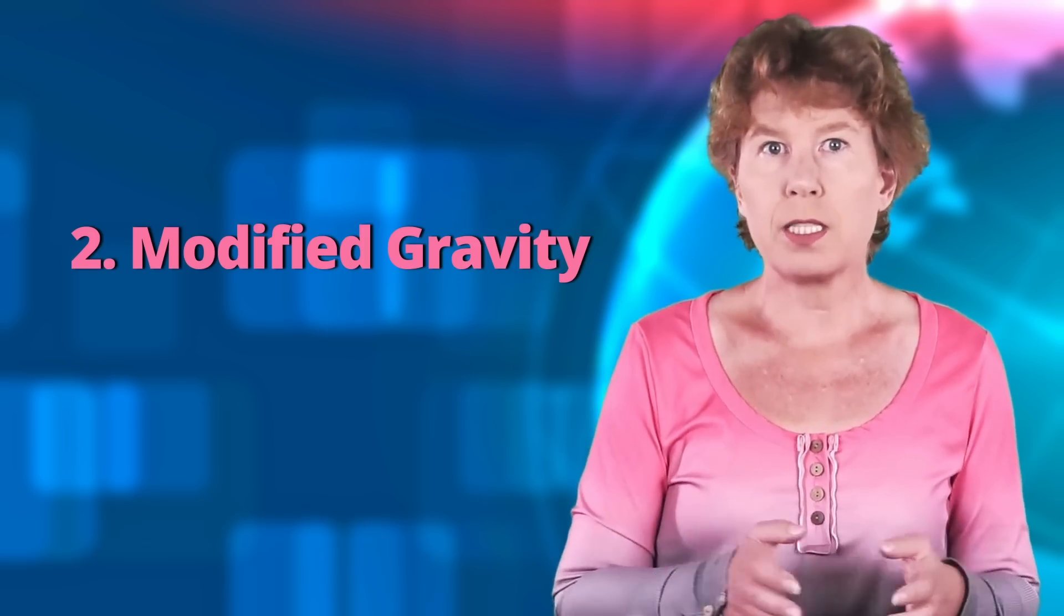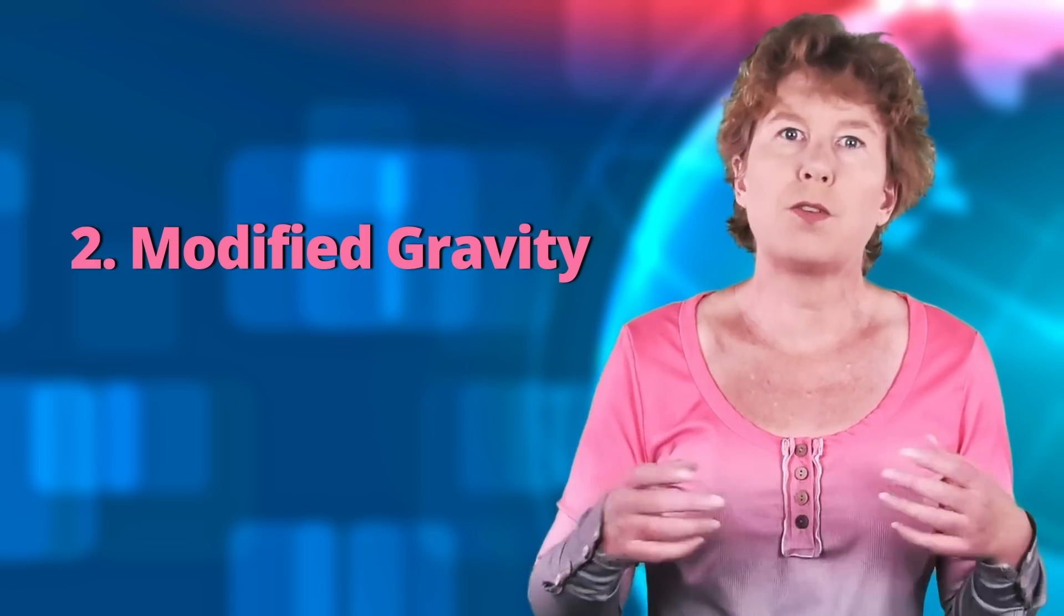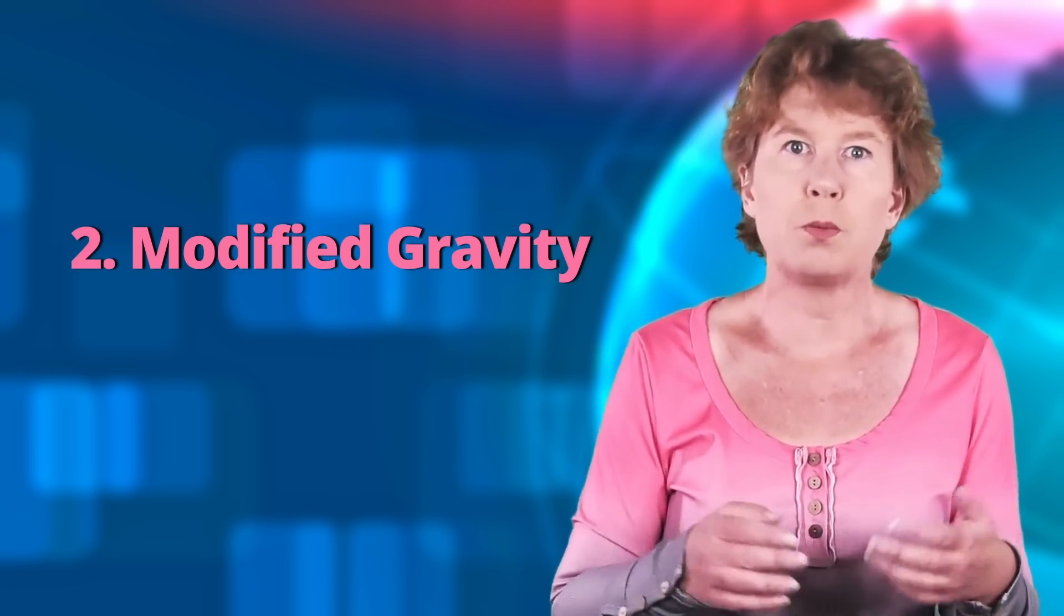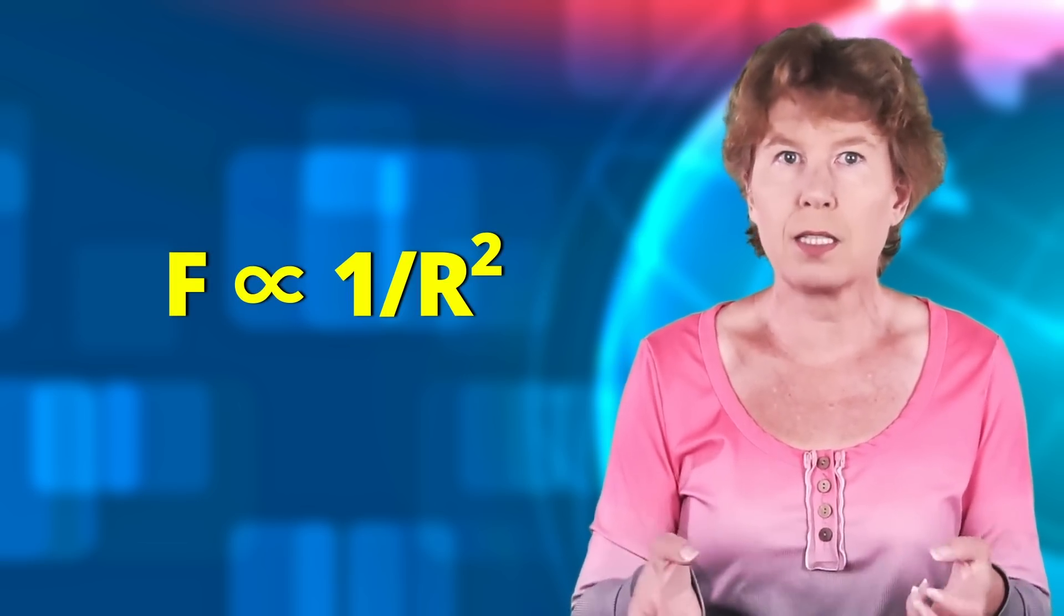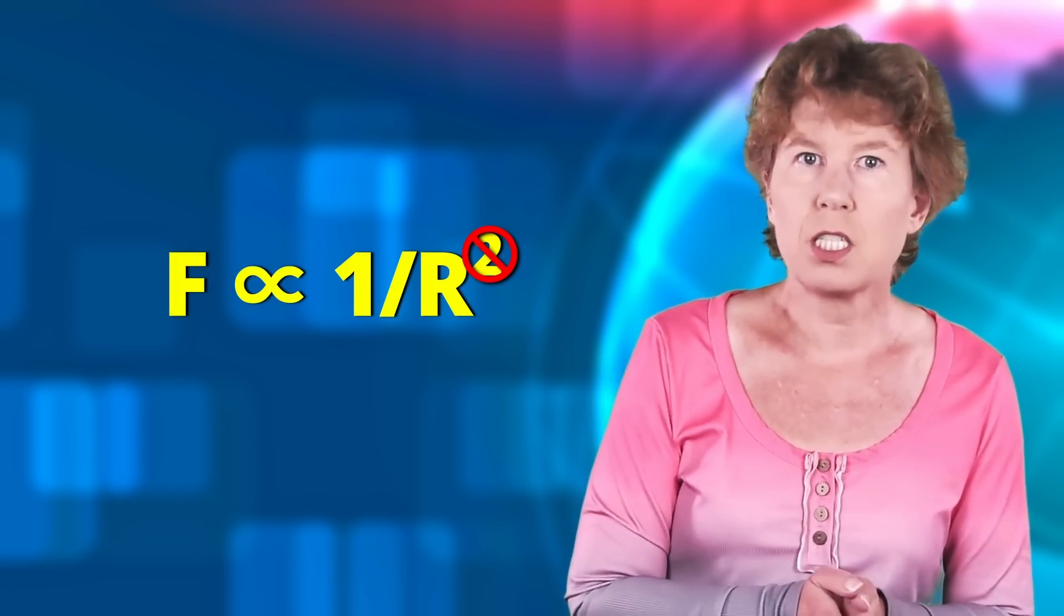Okay, so this is how dark matter works. The other way to explain flat rotation curves is to say that if you go to the far out reaches of a galaxy, then the gravitational force doesn't drop with the usual 1 over r squared, but just with 1 over r. This leads to flat rotation curves.